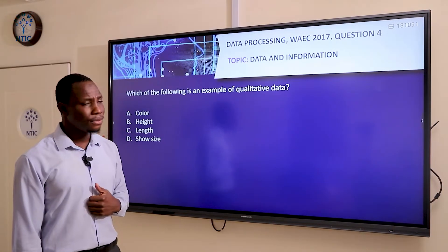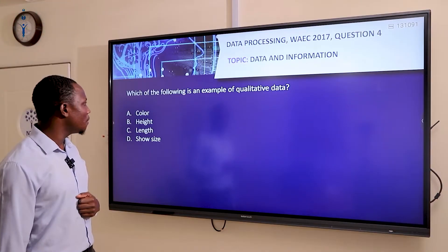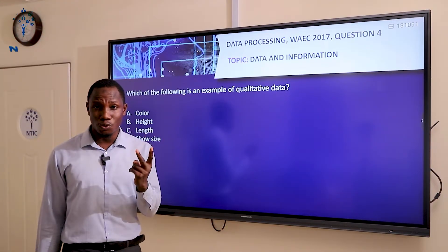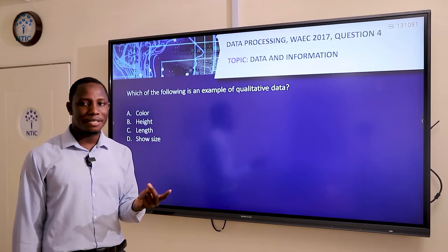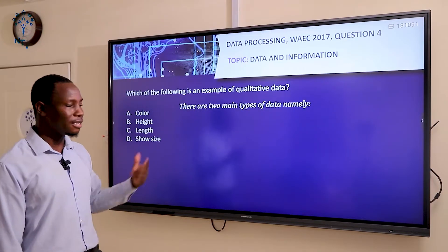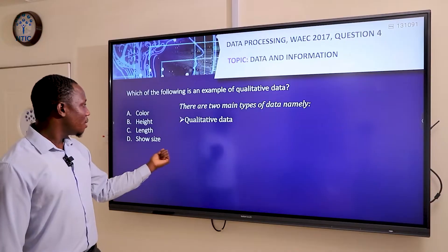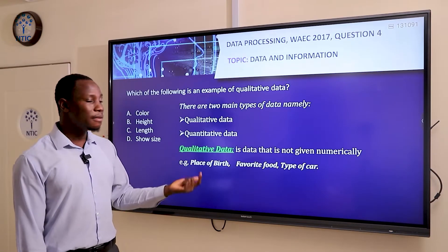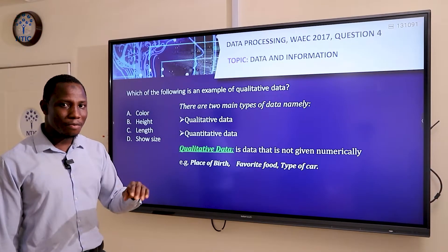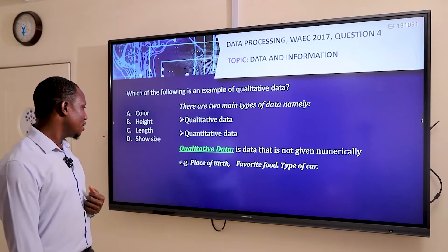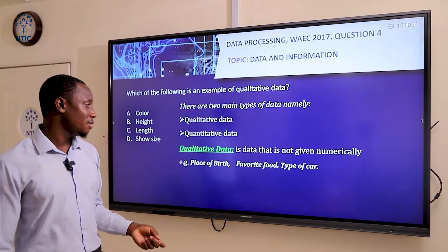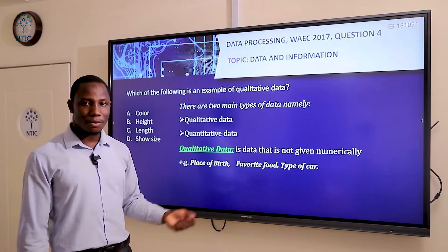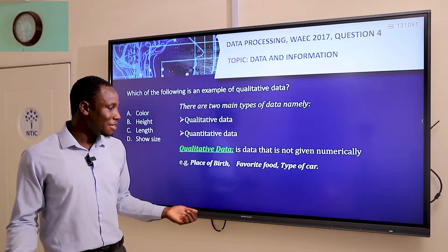Moving to question four: which of the following is an example of qualitative data? Data is divided into two types — quantitative data and qualitative data. Qualitative data is data that is not given numerically; it has no quantity. Examples include place of birth, paper, right foot, and color of a car — none of these have a numerical quantity.